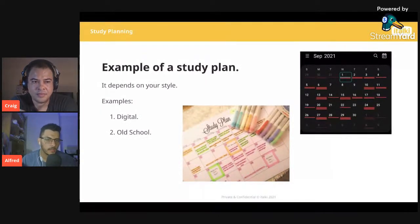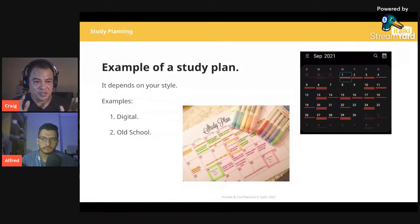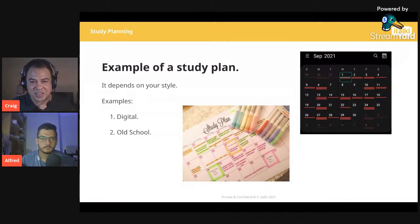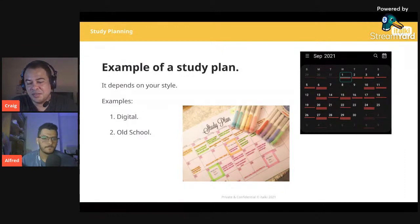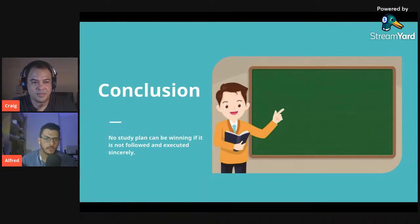Craig adds: different students have different goals and timeframes. For example, some students contact him needing to write an IELTS exam with a specific date, so you need to cover everything within that time. Other people are more relaxed and just want to improve general English, giving you a much longer period with them. It's important to keep things in perspective depending on the type of student. Alfred: no study plan can be winning if it's not followed and executed sincerely.